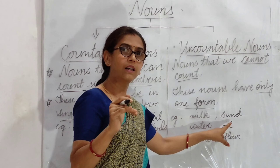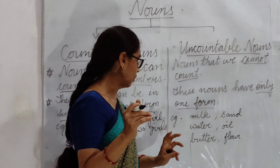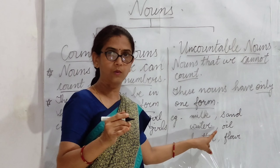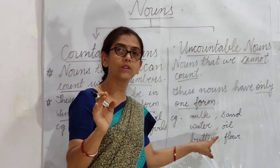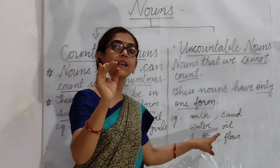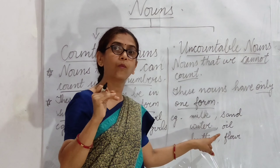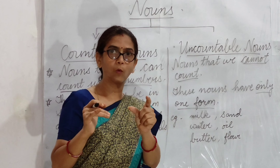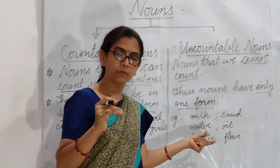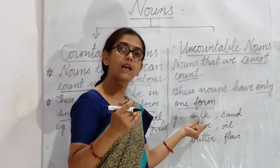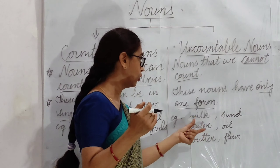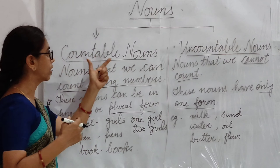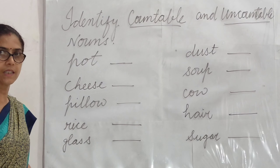All these are examples of uncountable nouns. We can use expressions with these nouns — agar aapko ek glass doodh chahiye, to aap bol saktay hain one glass of milk, ya one glass of water. We can use expressions like 'glass of water' with all these uncountable nouns, but we cannot make them plural. So this is about countable nouns and uncountable nouns. Let's proceed with the exercise.